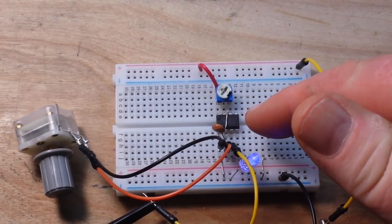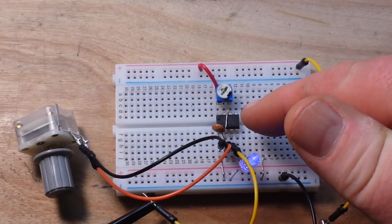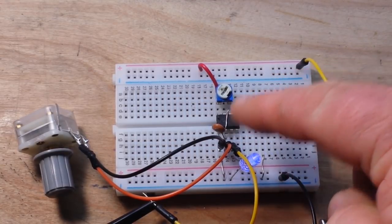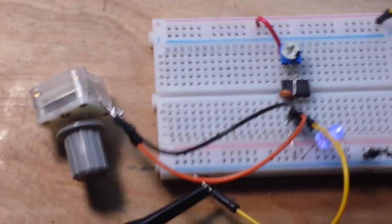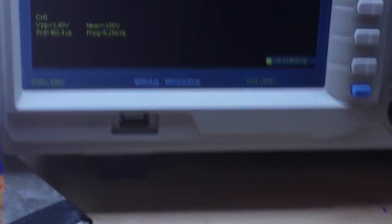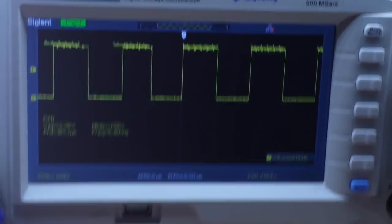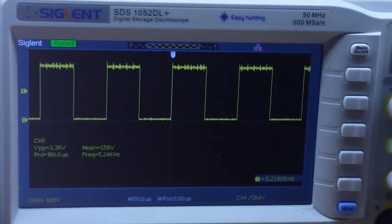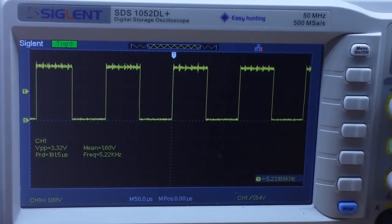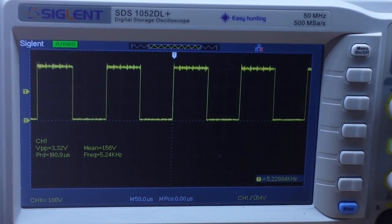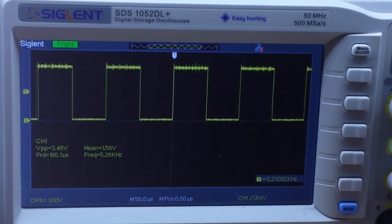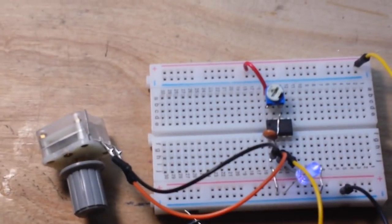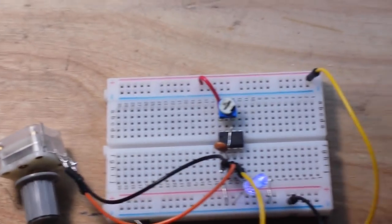Okay, so we've got our 555 set up as an astable multivibrator and then to run two capacitors in parallel and able to get into audio frequencies. So let's take a look up here at the scope, focus. And you can see we're at about five point two kilohertz.